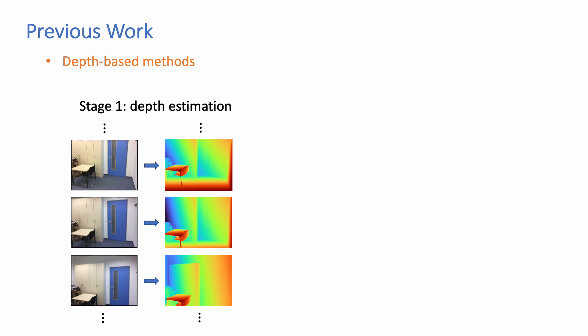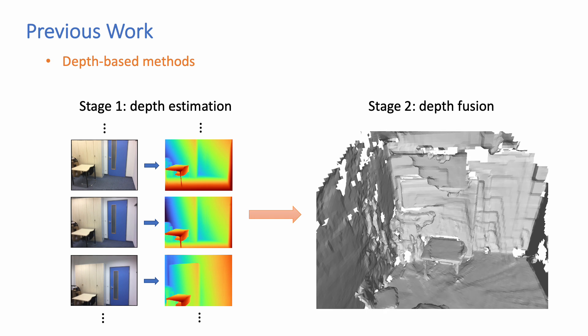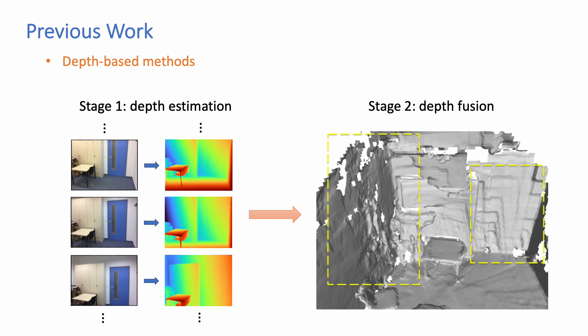Most previous works adopt a two-stage pipeline that they first estimate the depth maps for each keyframe image and then fuse them into a 3D TSDF volume. However, they struggle to produce coherent 3D surface, especially for the texture-less regions like the walls, because each depth is estimated separately.